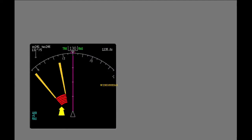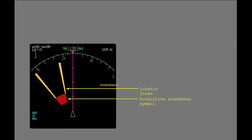This is the Predictive Wind Shear symbol. When active, it is shown on the navigation display in the expanded map, center map, VOR, or approach modes. The amber predictive wind shear symbol radials help identify and locate the wind shear relative to aircraft position.